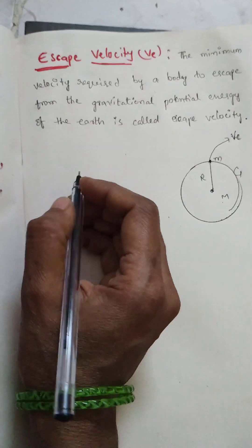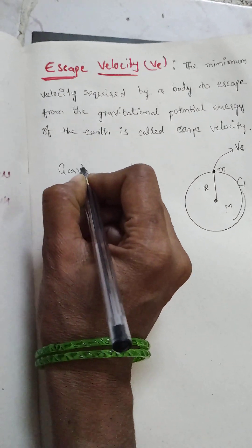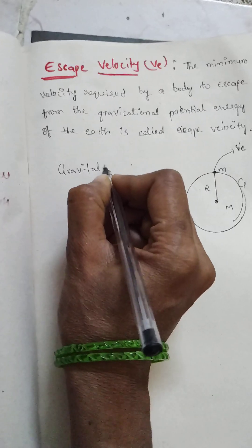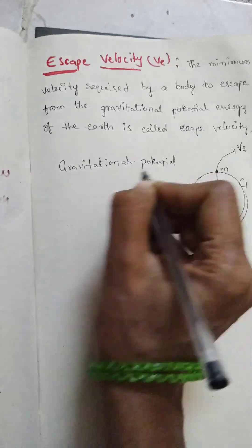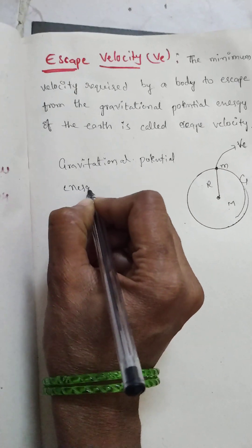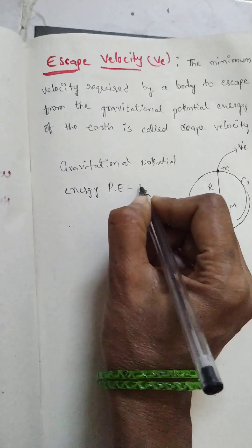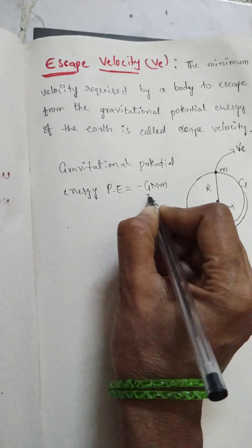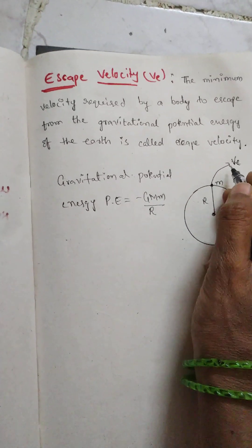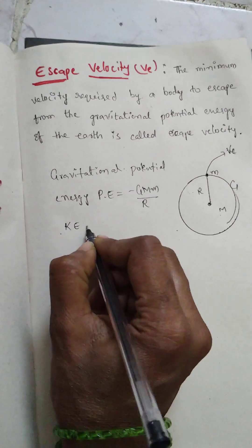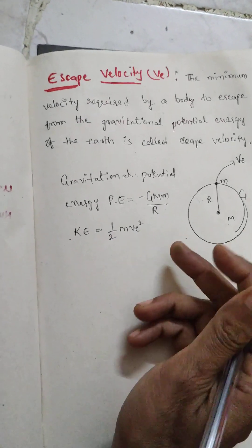In this case we have to consider gravitational potential energy. The formula for gravitational potential energy is PE = −GMm/R. Now, since this body is moving, it also contains kinetic energy: KE = ½mv².